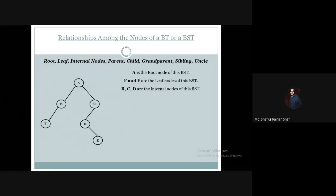Now let us discuss about the parent-child relationships existing in this structure. We can say that A is the parent of B and C, and vice versa, B and C are the children of A. Similarly, B is the parent of F, and F is the child of B. C is the parent of D, and D is the child of C. Lastly, D is the parent of E, and E is the child of D.